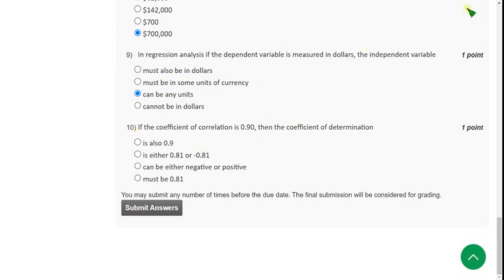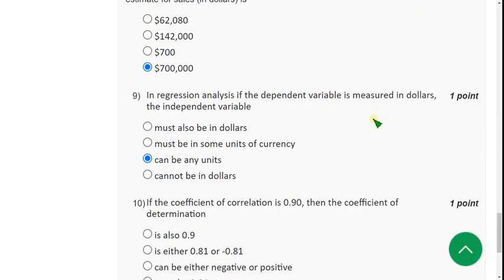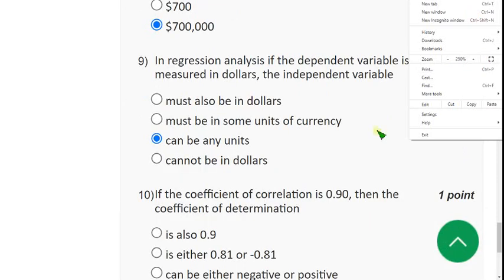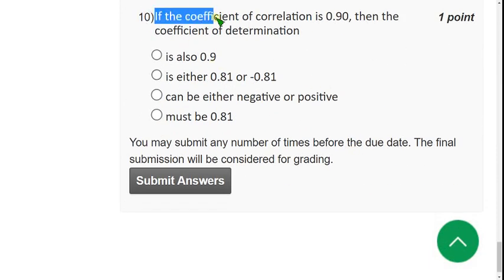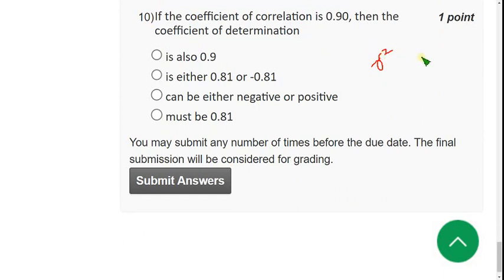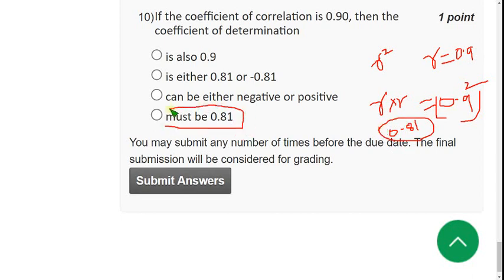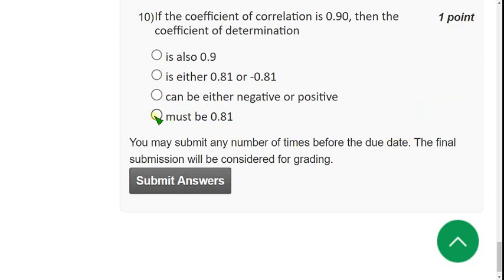And moving on to the final question of the assignment. That is tenth one. So tenth question. If the coefficient of correlation is 0.9, then the coefficient of determination is. So guys we know that coefficient of determination is r square. And coefficient of correlation is r. Here r is given 0.9. Then what will be r square. r into r is equal to 0.9 square. So the answer will be 0.81. So the answer is fourth option. So mark option 4 as correct answer for tenth question.